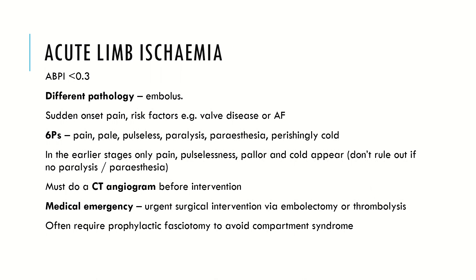The third condition, acute limb ischemia, should not be seen as a progression of the previous two — it's a completely different pathology. Unlike the slow buildup in claudication and critical limb ischemia, acute limb ischemia is a sudden onset ABPI of less than 0.3 due to an embolus, with risk factors including valvular disease, cancer, or AF. The textbook presentation is the six P's: pain, pale, pulseless, paralysis, paraesthesia, and perishingly cold. The first to appear are pain, pulselessness, pallor, and cold. If paralysis and paraesthesia are present, the leg is very late-stage and potentially not salvageable.